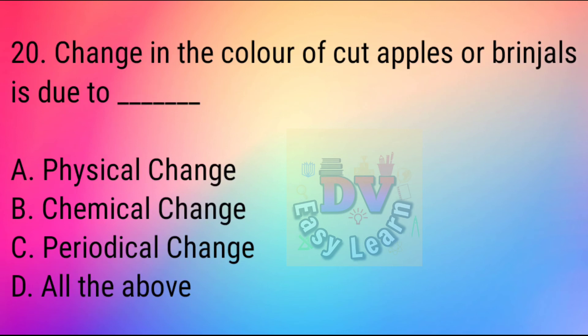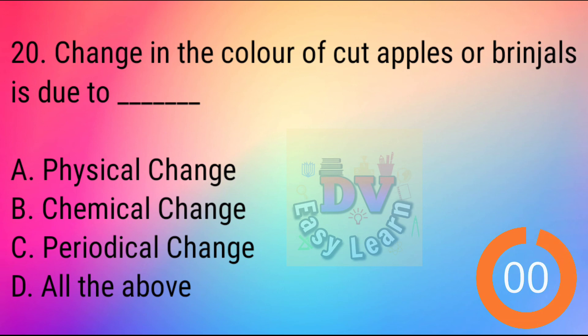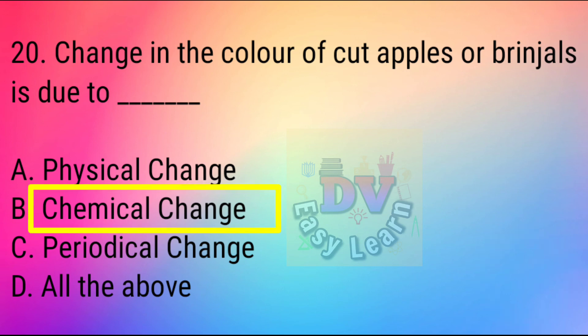Question No. 20: Change in the colour of cut apples or green gels is due to — Correct answer: Chemical change.